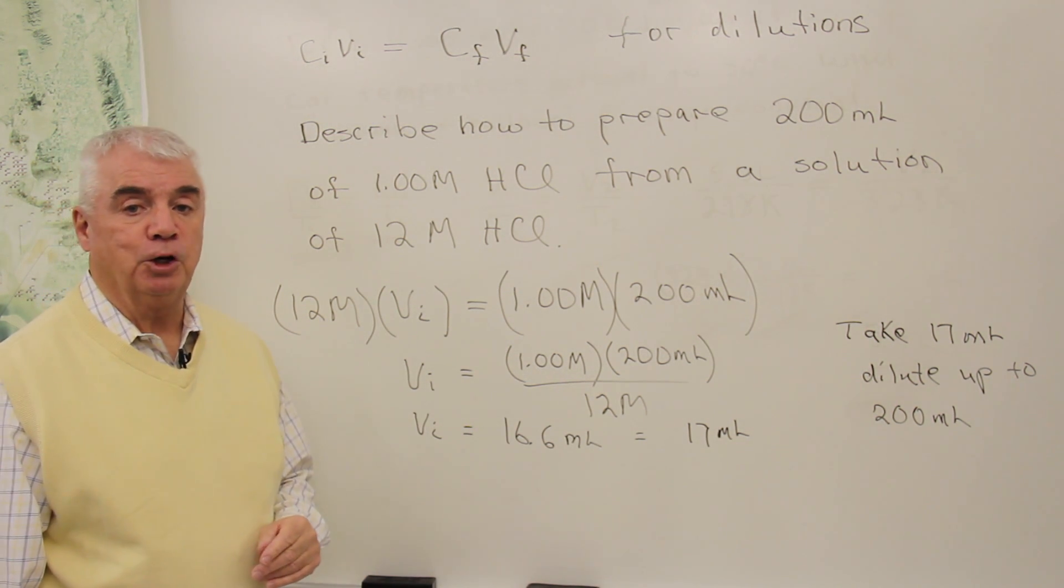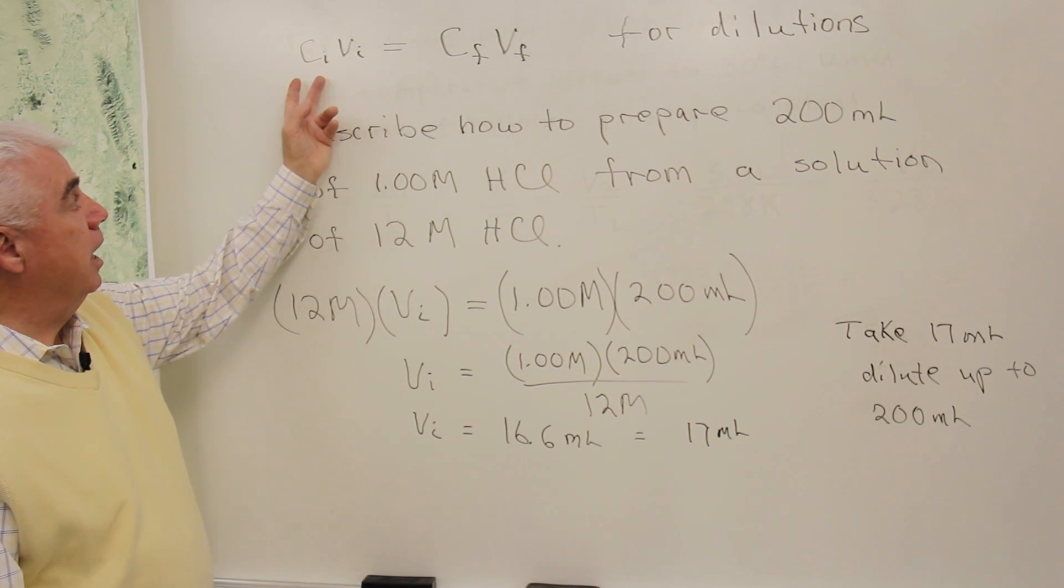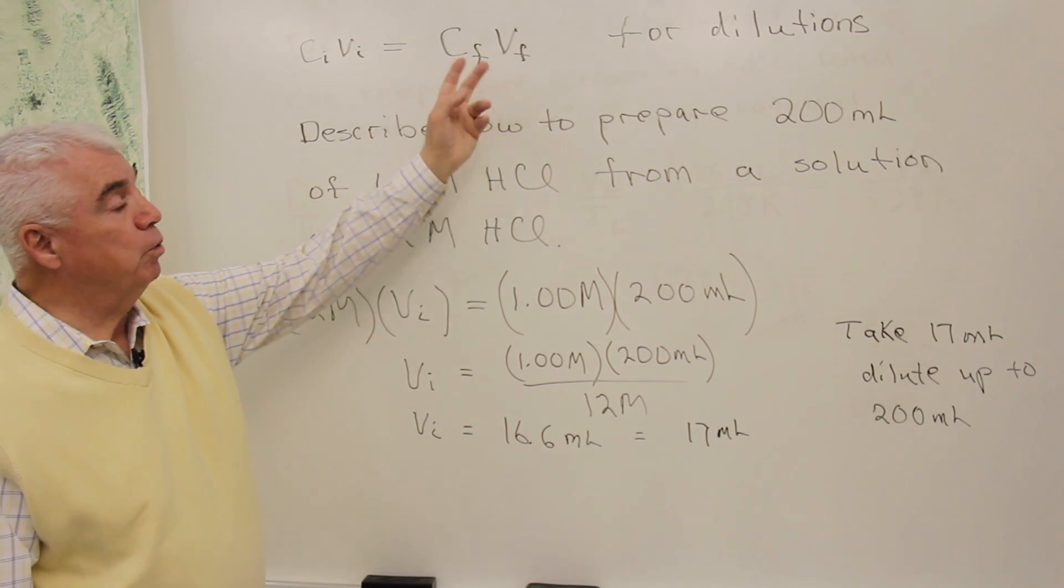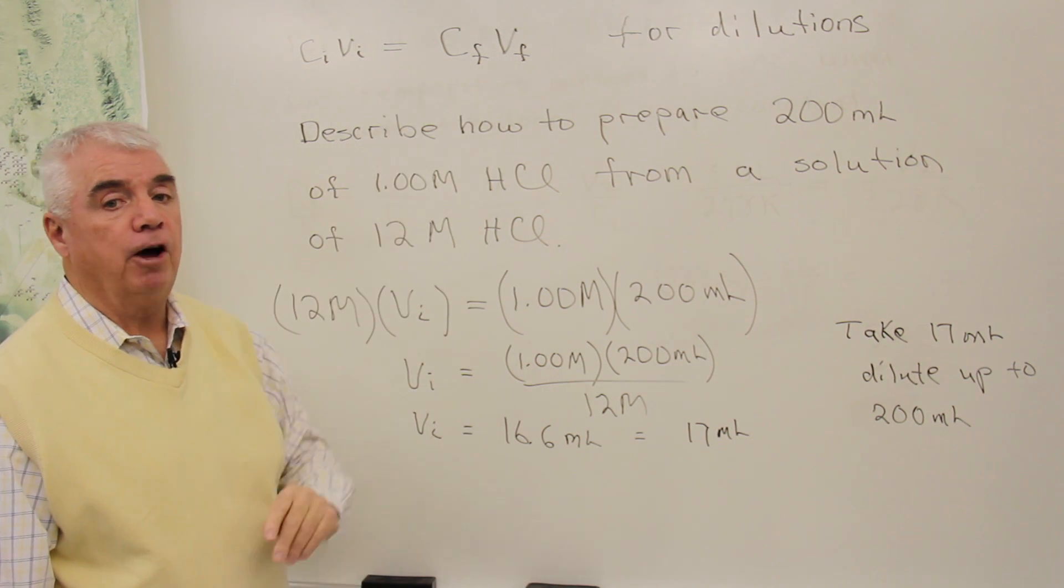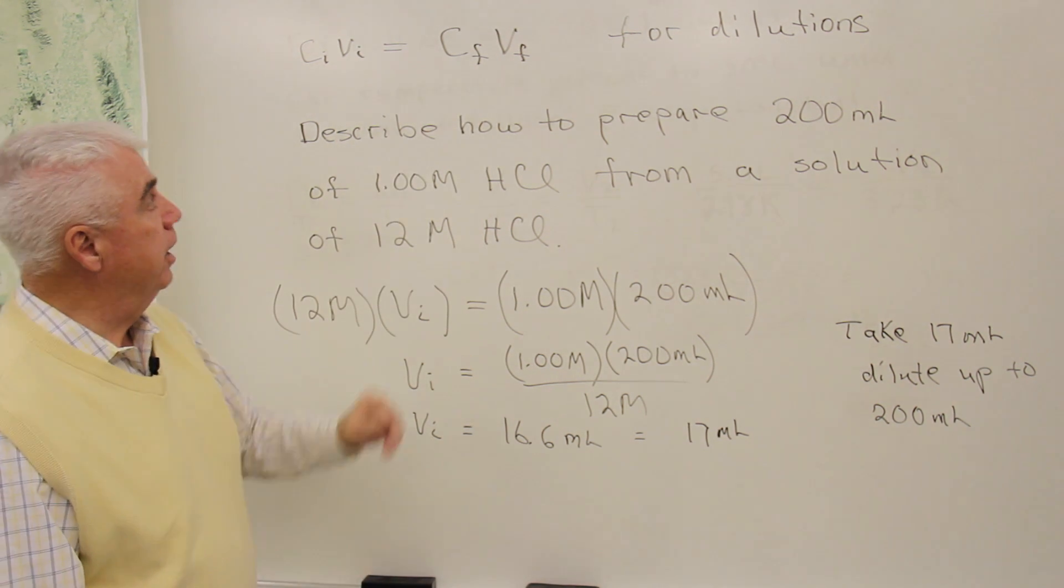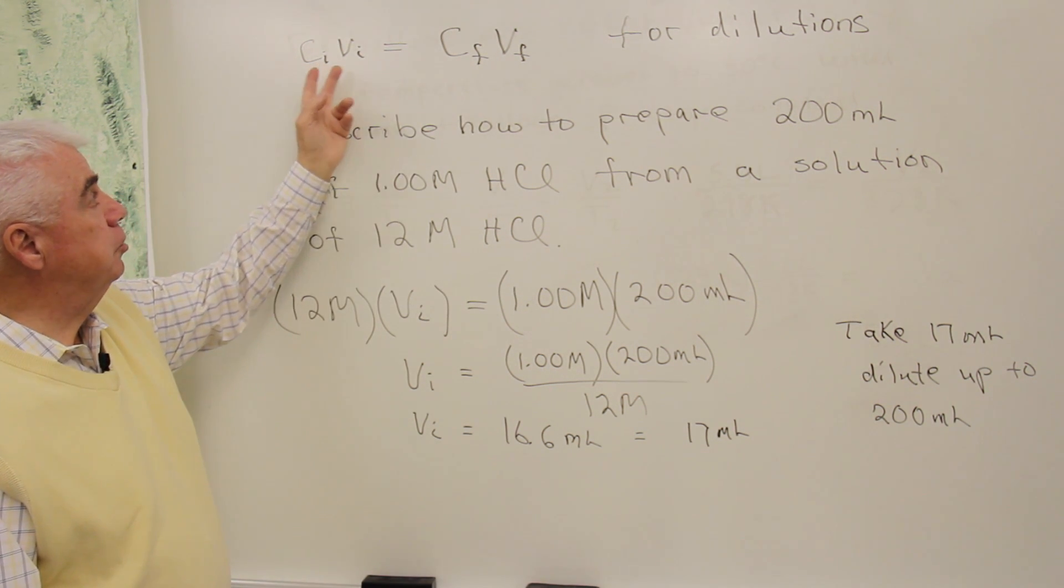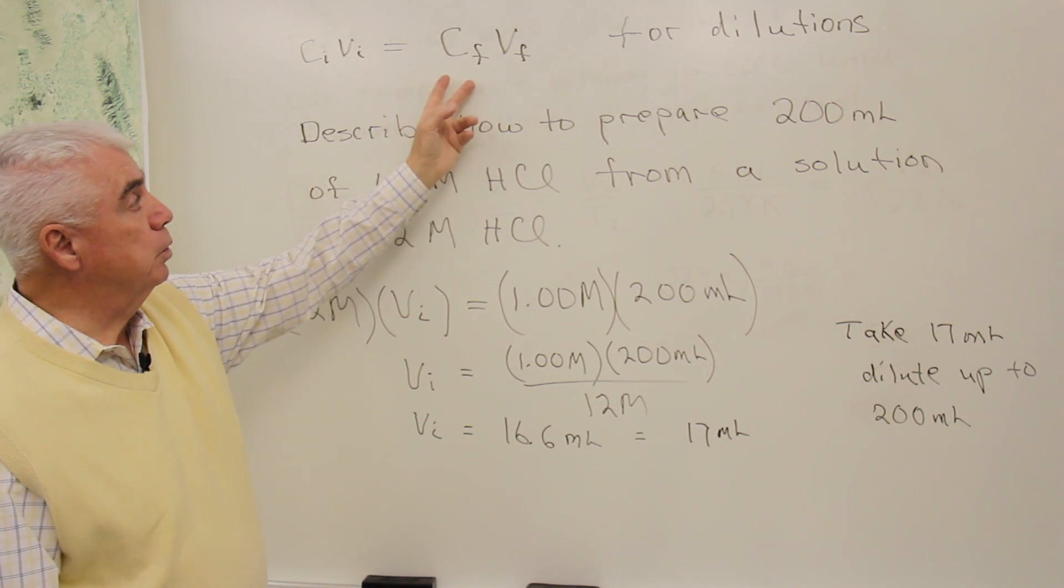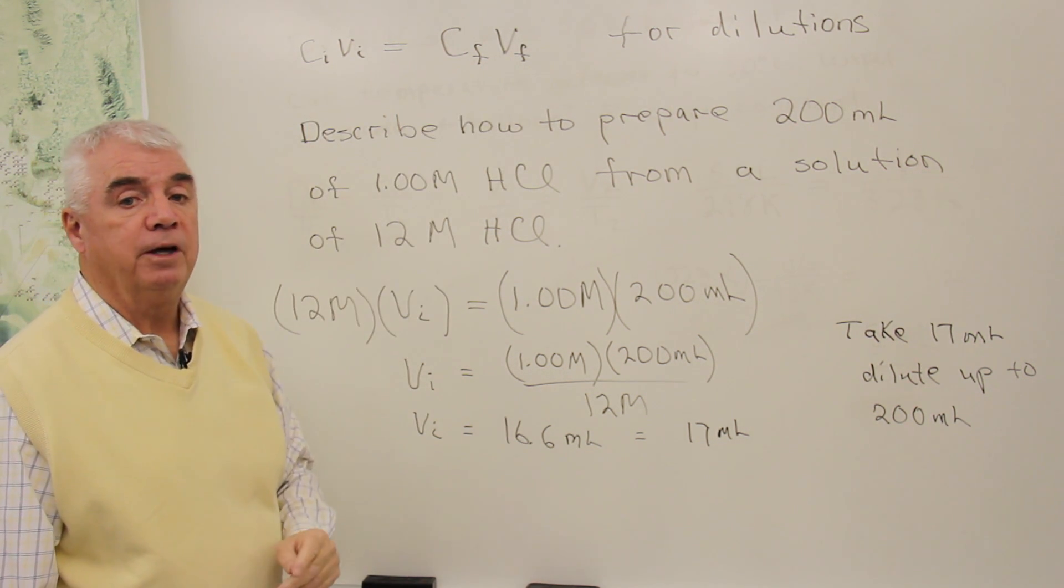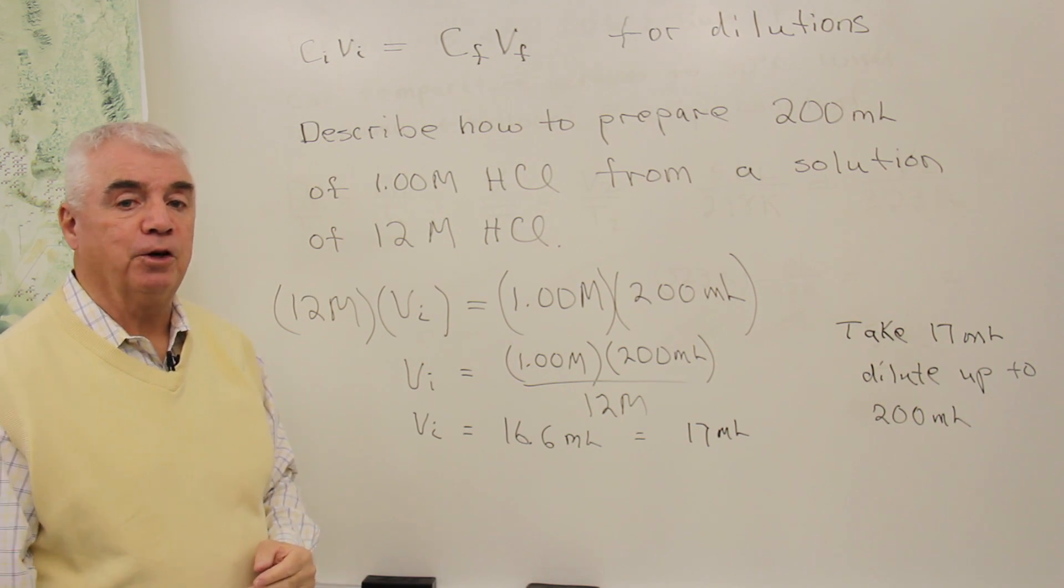And we have a formula for dilutions. It's C V is equal to C V. The initial conditions are equal to the final conditions. In other words, the concentration times volume that you have initially is equal to the concentration and volume that you have when you finish the dilution.